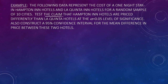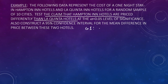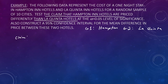We want to test the claim that Hampton Inn hotels are priced differently than La Quinta Inn hotels at α = 0.05. Before we start, we identify group one as Hampton Inn and group two as La Quinta. The claim is that they are priced differently — when we see the word 'differently,' we know the symbol is not equal, so the claim is μ1 ≠ μ2.